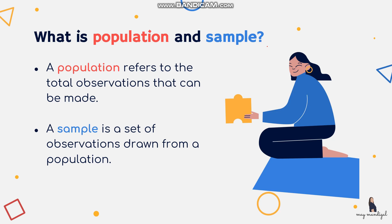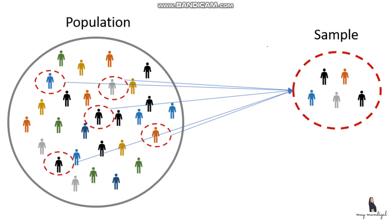Just to show an illustration: on your left we have the population, and as you can see there can be a lot of respondents. If we consider the sample, you just have to choose some of the respondents from the population.